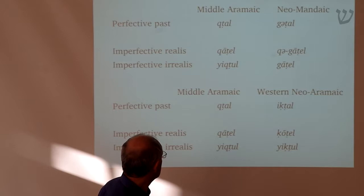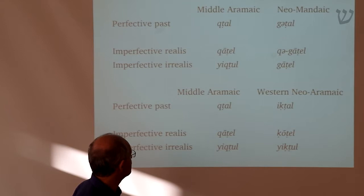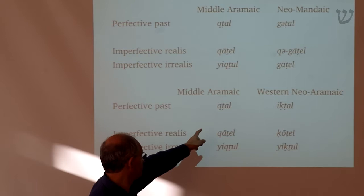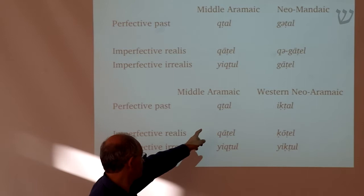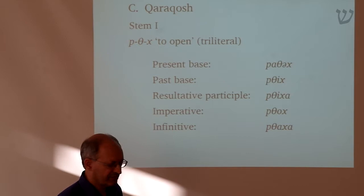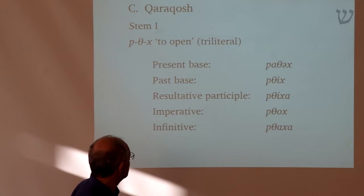If we quickly look at other Neo-Aramaic dialects, we see that others have preserved more of the original system of Middle Aramaic. Neo-Mandaic has preserved the 'katal' form, and Western Neo-Aramaic has preserved both the 'katal' form and the 'yuktul' form. So NENA and Turoyo are the most innovative in this respect.